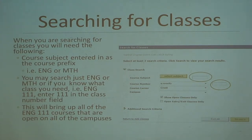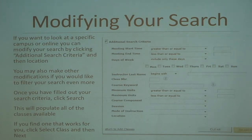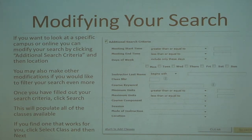You can also modify your search — for example, if you wanted to search just at the Bedford campus or one of our off-site centers, or just look at online classes, or filter by certain days of the week. You can filter out any variables that you want to. Then you click Search and it will only bring up the classes that meet that criteria.